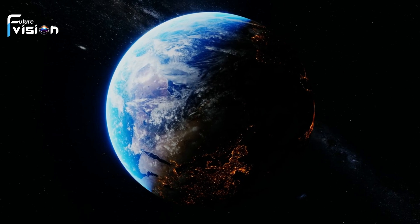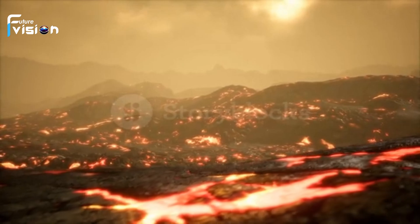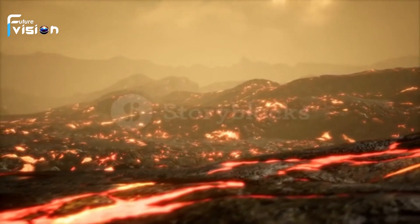Around 4.5 billion years ago, Earth was a molten world, its surface a sea of lava. But as it cooled, a thin crust formed, and water vapor condensed into oceans.